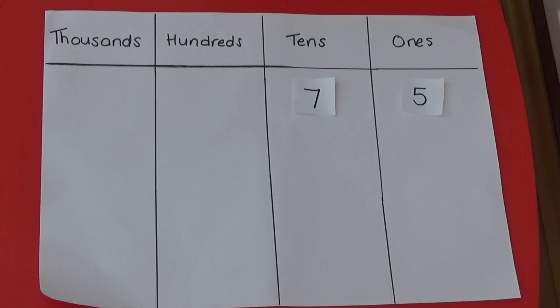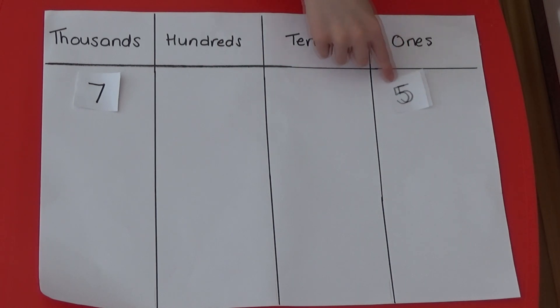So when we multiply 75 by 100, 7 10s move 2 columns to become 7,000. And 5 1s move 2 columns to become 500. We can't leave the 10s and 1s column empty, so we need to put 0 in the 10s and 1s column.